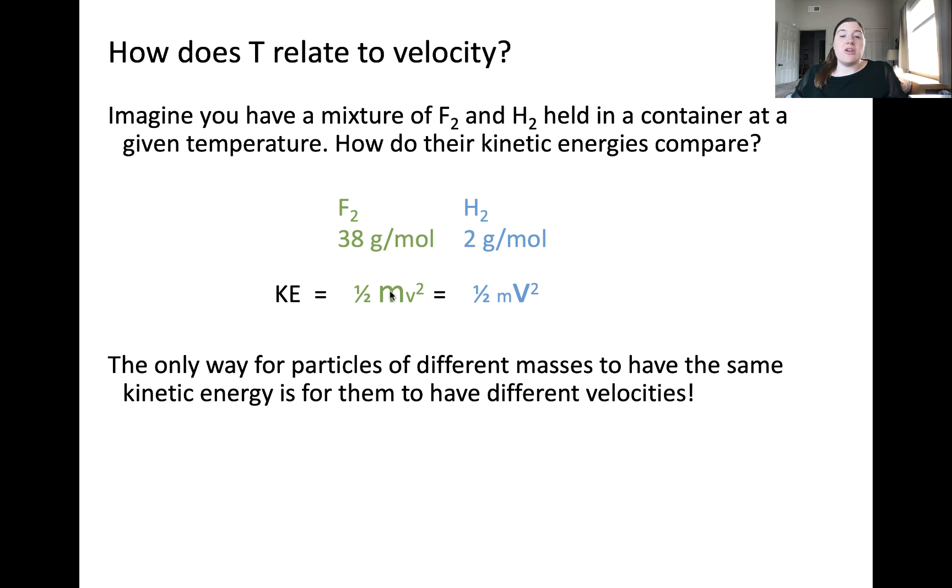The mass of fluorine is larger than hydrogen, which is represented by this large letter M versus the small m for hydrogen. And since they both have the same kinetic energy, the velocity of fluorine is much, much lower than that of hydrogen. The very important implication of this idea is that the only way for particles of different masses to have the same kinetic energy is for them to have different velocities.